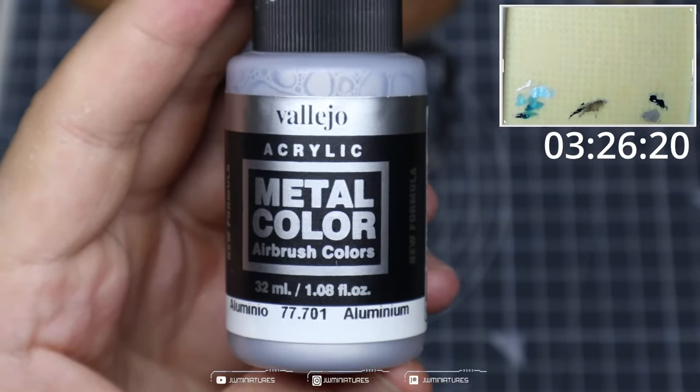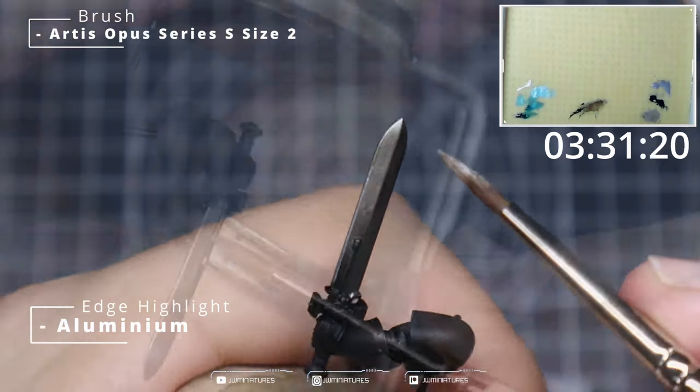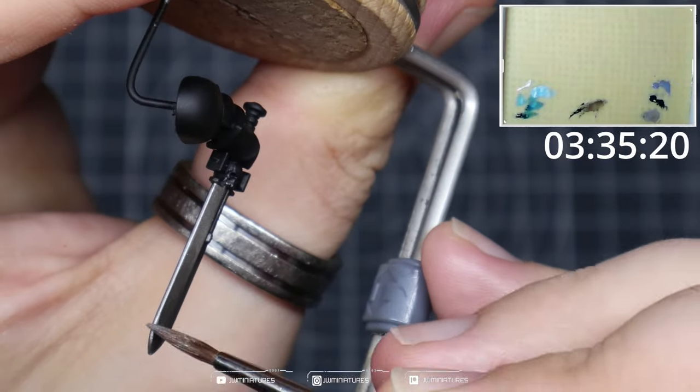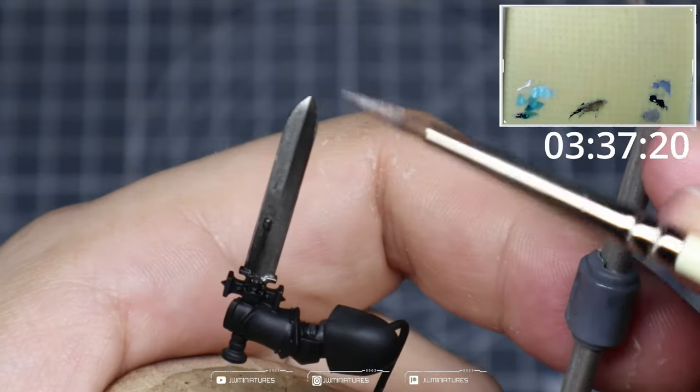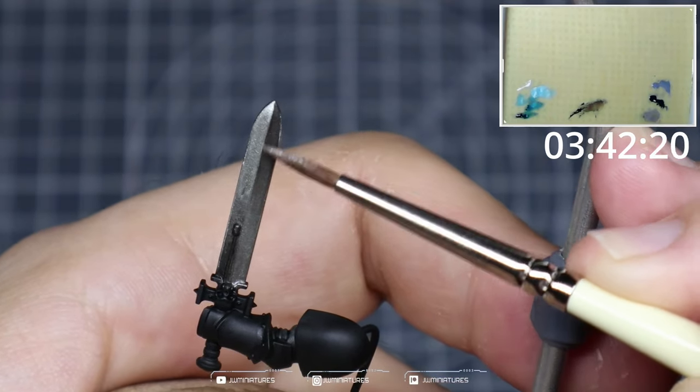Next we're just going to come in with some Aluminum from the Vallejo Metal Colour series and we're just going to add in some quick edge highlights here. So grab both sides of the blade and then do your best to hit that center line down the middle of the blade.